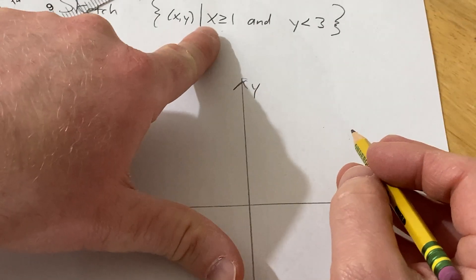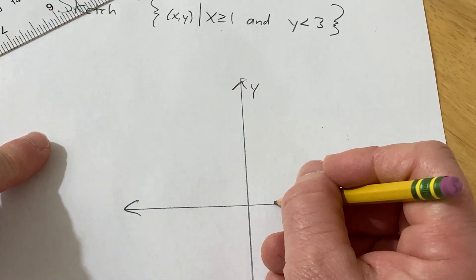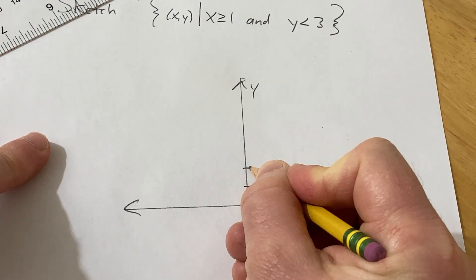So we need all the ordered pairs such that x is greater than or equal to 1 and y is less than 3. Let's say this is 1 and this is 1, 2, 3.